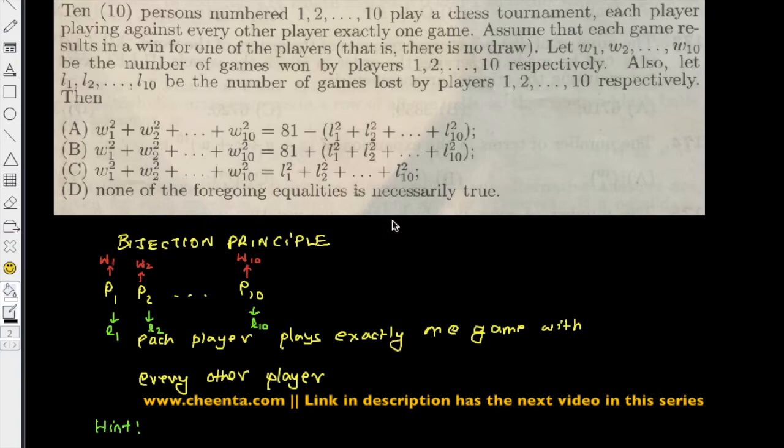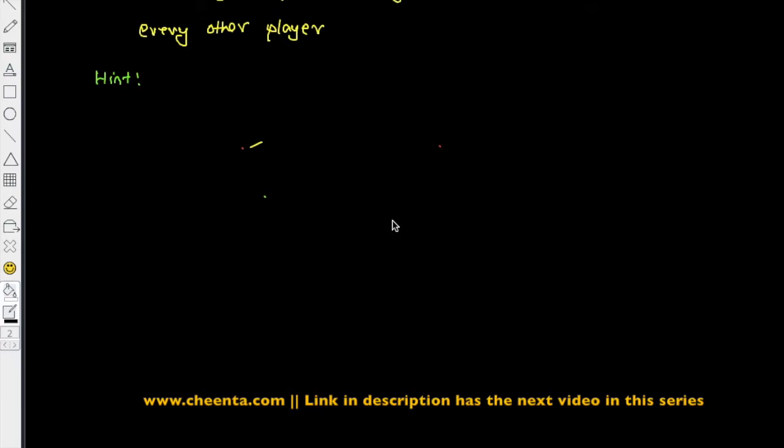Firstly, compute the number of matches. That's quite simple - you have to compute 10 choose 2, or 10C2, whichever notation you are familiar with. From 10 teams you have to choose two teams who are playing the game, and since each team plays every other team exactly once, this would be the number of games. That's equal to 10 times 9 divided by 2, which is 45.